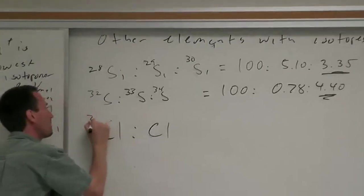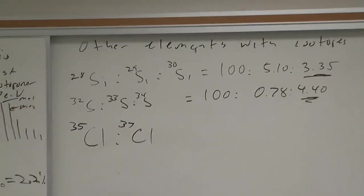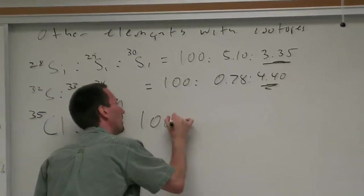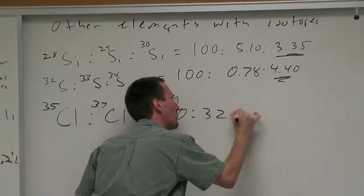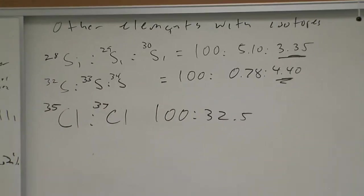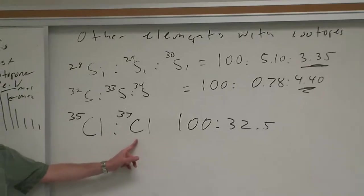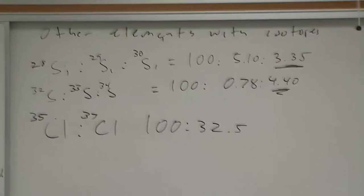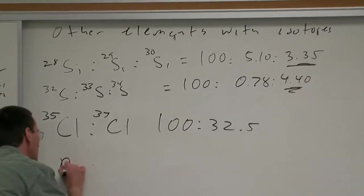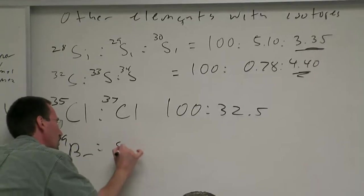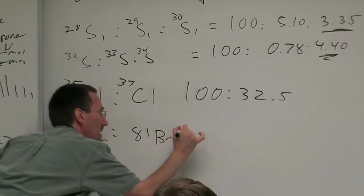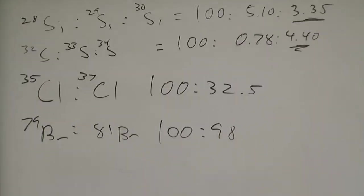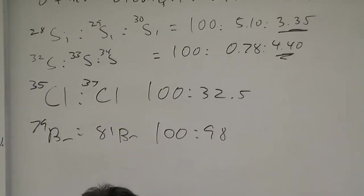Not all elements whisper, some of them scream. Chlorine is one that screams. Chlorine consists of a mixture of chlorine 35 and chlorine 37 in 100 to 32.5 ratio. Chlorine by having a very pronounced M plus 2 peak screams out at you hey look at me, I've got a chlorine here. Bromine also screams with two isotopes, bromine 79 and bromine 81 in 100 to 98 ratio.